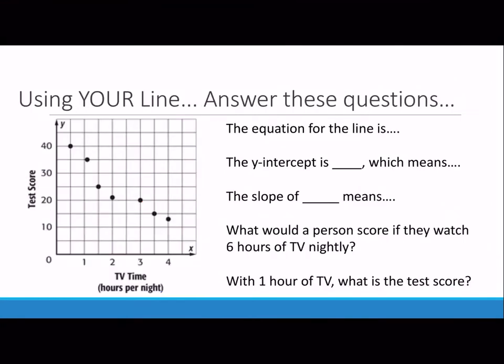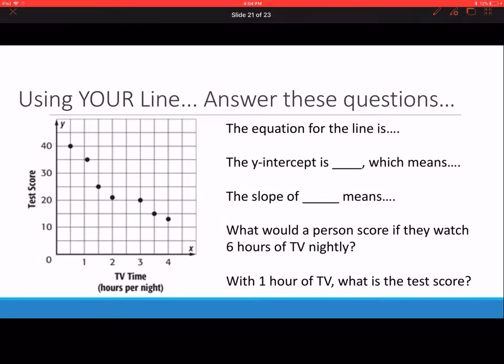Using your line, answer these questions. You're going to draw a line of best fit. Try and go through at least two points. Determine what the y-intercept is and what it means in terms of this equation. Write the equation for the line. Do slip and slide and determine what the slope of the line is and what it means. Remember that we're talking about test scores and TV time.